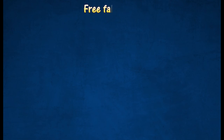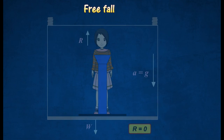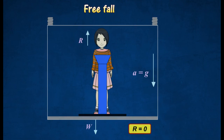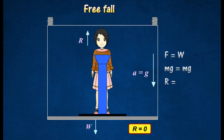If the lift cable breaks, the reaction force will be zero. The resultant force will thus be given by the following equation. The girl feels like floating, and apparently becomes weightless.